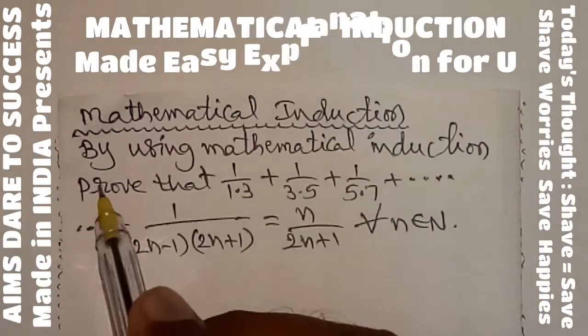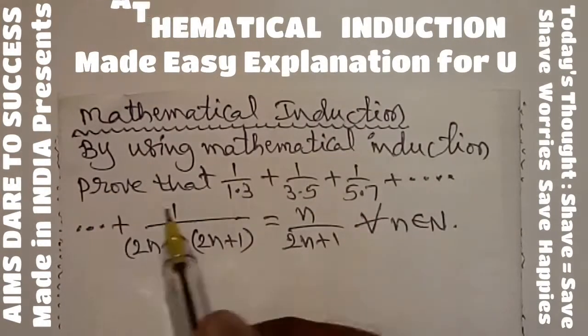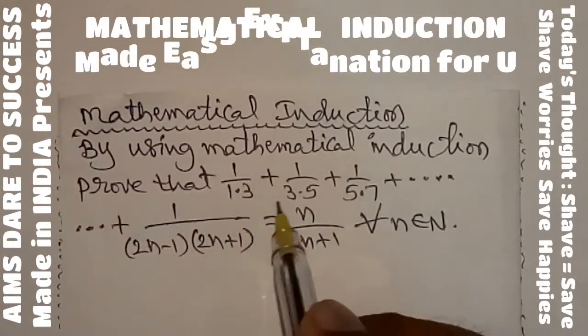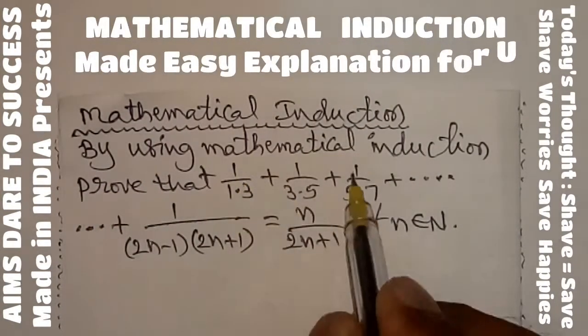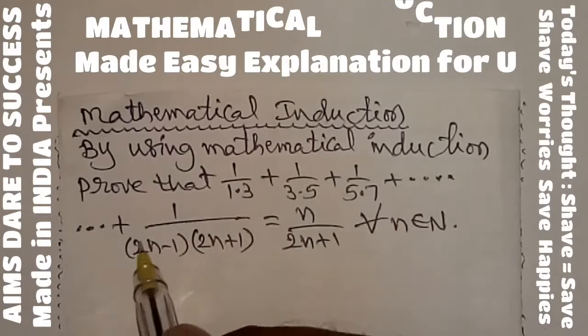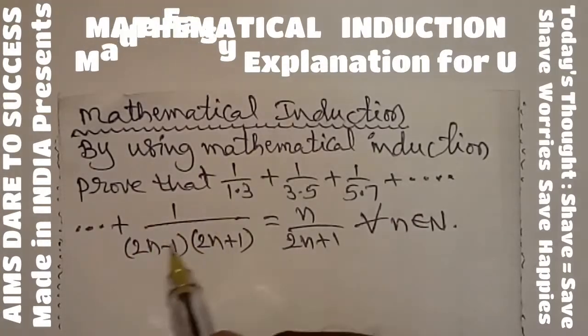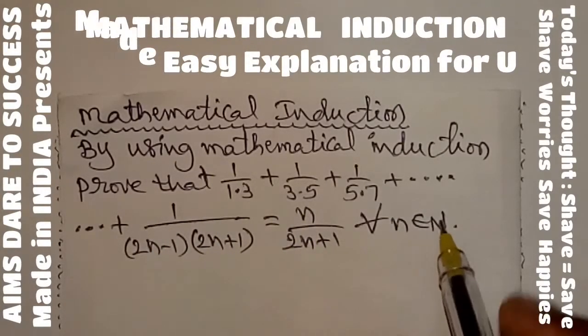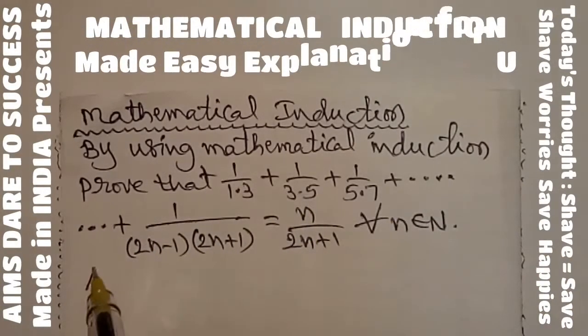Now I want to explain directly by using Mathematical Induction. I will prove that 1/(1×3) + 1/(3×5) + 1/(5×7) + ... + 1/((2n−1)(2n+1)) = n/(2n+1) for all n belonging to ℕ.